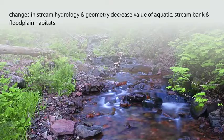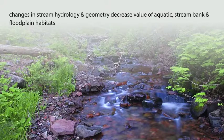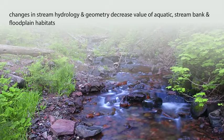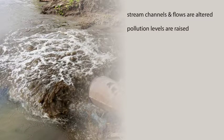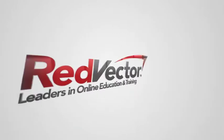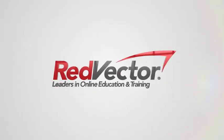Changes in stream hydrology and geometry combined with reduced water quality decrease the value of aquatic, stream bank, and floodplain habitats. Stream channels and flows are altered and pollution levels are raised, problems that are further exacerbated by low summer flows and higher water temperatures.